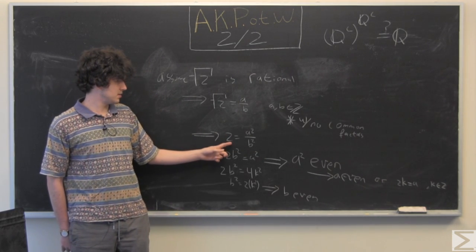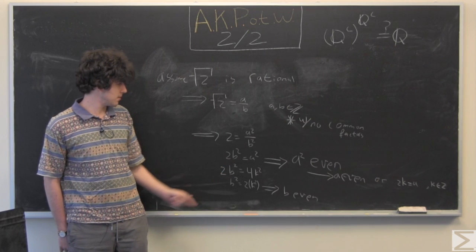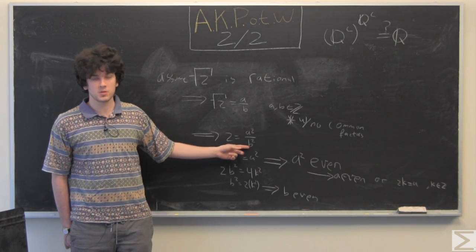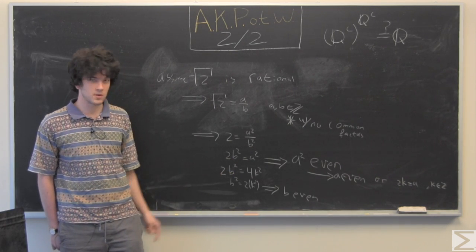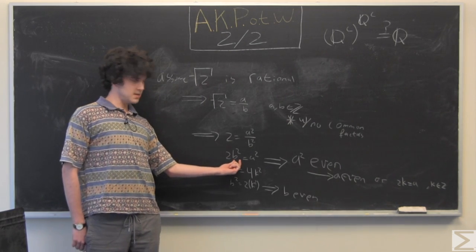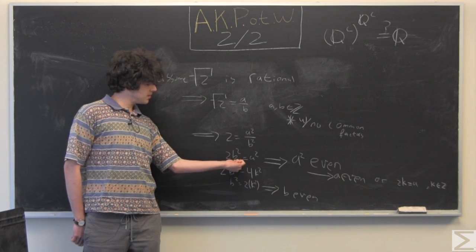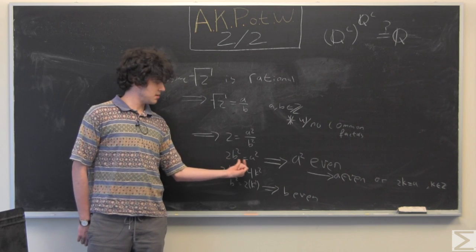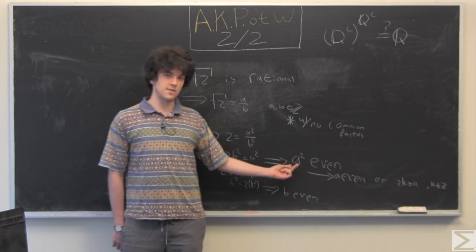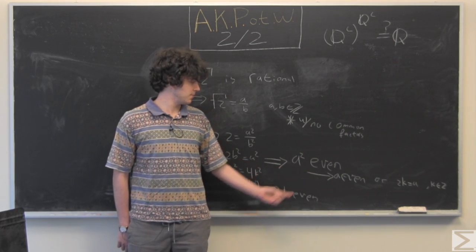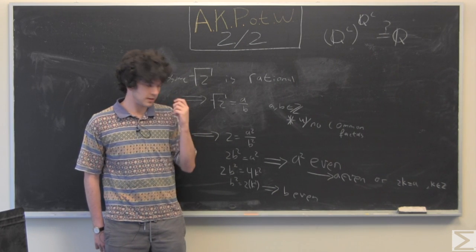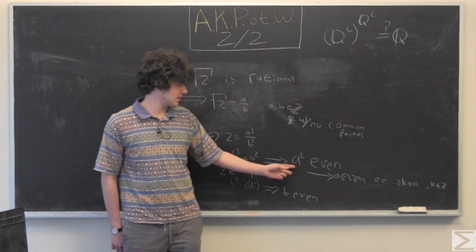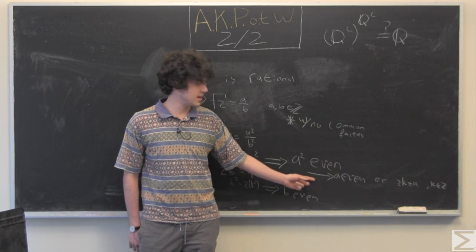So we square both sides, 2 equals a squared over b squared, multiply b squared on both sides, 2b squared equals a squared, and since b is an integer, b squared is going to be an integer, which means 2 times some integer equals a squared, which is the definition of a being even. And there is another proof that you can do if you really want to be rigorous, saying that if a squared is even, that implies a is even. That's a simple proof, I'll leave that to the viewer.